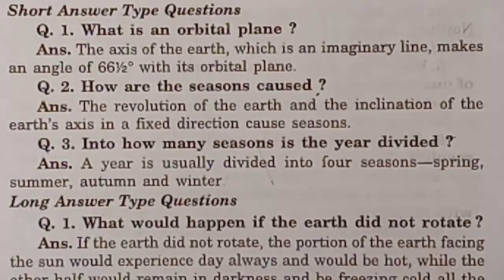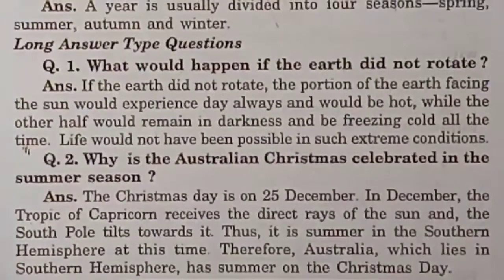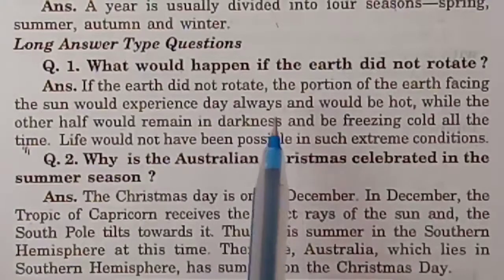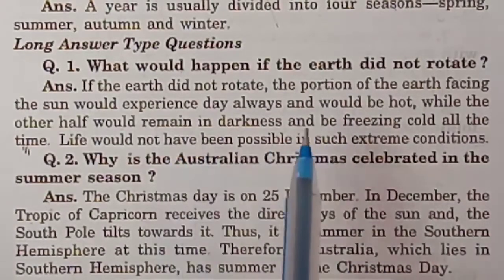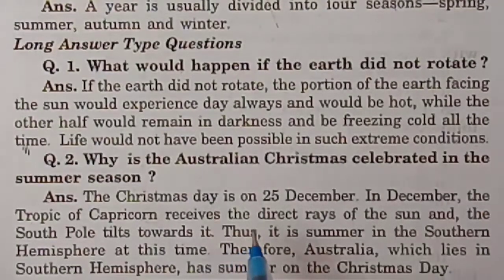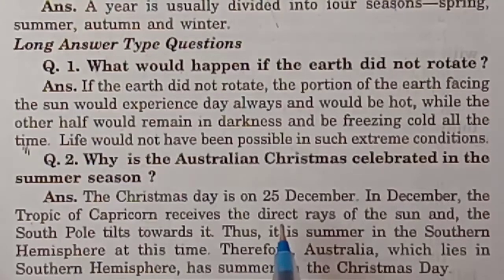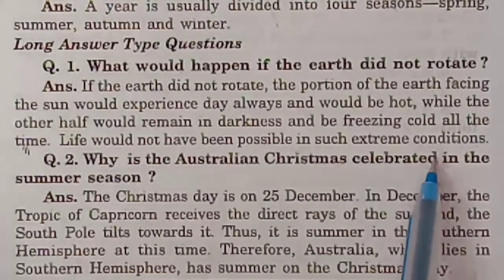What would happen if the Earth did not rotate? If the Earth did not rotate, the portion facing the sun would experience day always and would be very hot, while the other half would remain in darkness and be freezing cold all the time. Life would not have been possible in such extreme conditions.